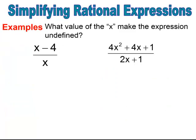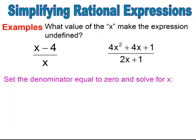In this example, we want to find the values of x that would make the expression undefined. In order to find the value, you would have to set the expression in the denominator equal to zero and then solve for x. When I take the expression in the denominator of the first rational expression and set x equal to zero, it's already solved, and I find the value that would create a zero in the denominator. So x cannot equal zero, because then I would have zero in the denominator — therefore, that would be a restriction on this rational expression.